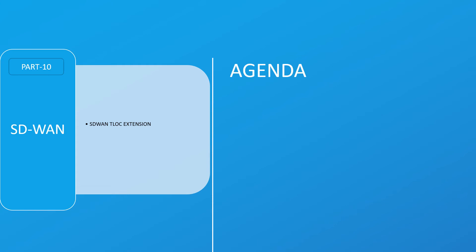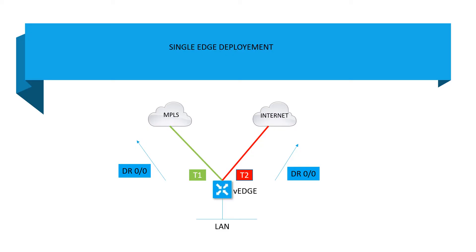Hey everyone, my name is Ajay and this is Part 10. Today we are going to discuss SD-WAN T-Lock extension. Let's start with single edge deployment for a branch site where you have a single VH device. In this case the VH is single, and there are two connectivity options: one from the MPLS provider and one from the internet.